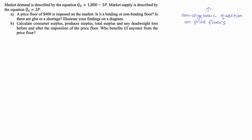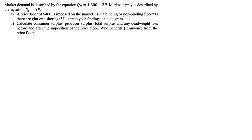In this question we are told that market demand is described by the equation Qd = 1,800 − 3p, and market supply is described by the equation Qs = 2p. Let's start thinking about part A. A price floor of $400 is imposed on the market. Is it a binding or non-binding floor? Is there a glut or a shortage? Illustrate your findings on a diagram.